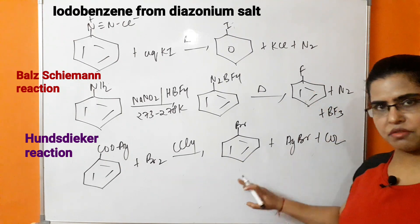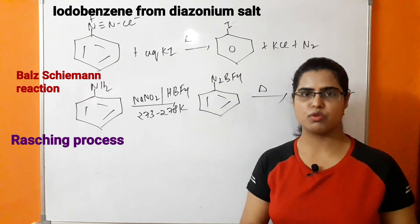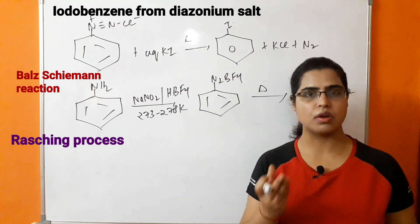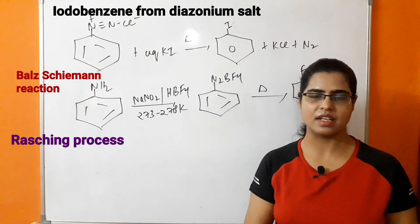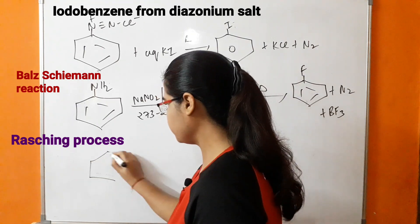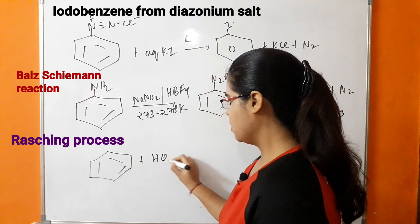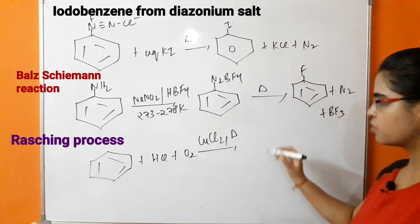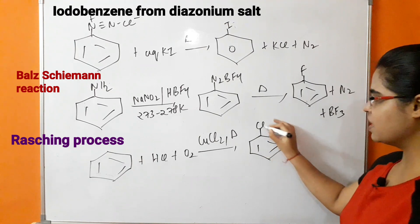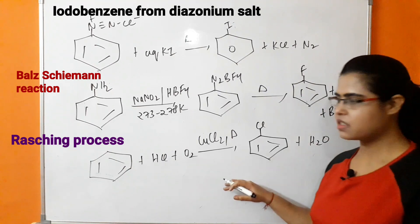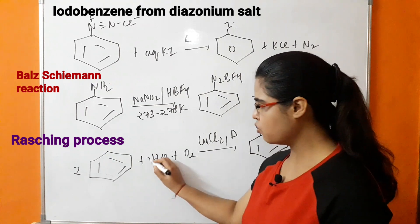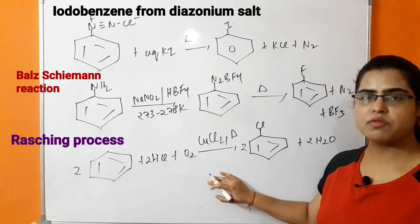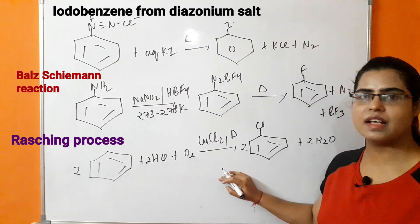The next preparation method is the commercial preparation of chlorobenzene. A mixture of benzene vapor with HCl and air is passed over heated cupric chloride, resulting in the formation of chlorobenzene. The balanced reaction requires two moles of benzene and two moles of HCl to produce two moles of chlorobenzene and two moles of H2O. This commercial preparation method is known as the Raschig process.